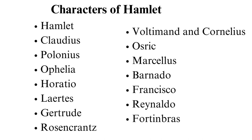Claudius, king of Denmark, brother to the late king, and Hamlet's uncle, is the play's antagonist. Sexual appetites and greed for power drive him to kill his brother. Claudius occasionally shows signs of guilt for his actions and sincerely loves Gertrude.